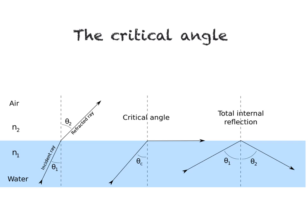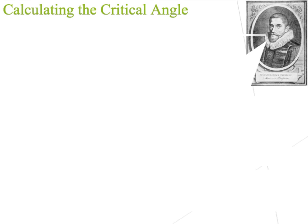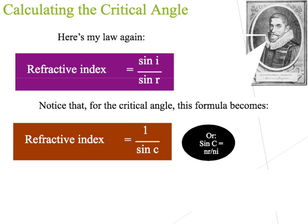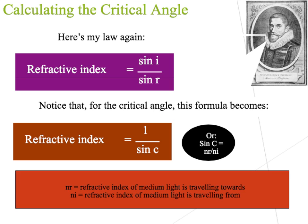For glass, the critical angle is around 42 degrees. In order to calculate the critical angle between two mediums we can use Snell's law. Snell's law states that the refractive index equals sine i over sine r. Rearranged to calculate the critical angle, the formula becomes the refractive index equals 1 over sine c, or sine c equals N_R over N_I, whereby N_R is the refractive index of the medium light is travelling towards, N_I is the refractive index of the medium the light is travelling from, and sine c is the sine of the critical angle.